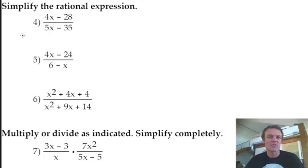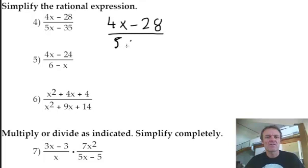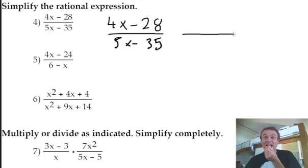So, this first one. I have 4x minus 28 on the top. I've got 5x minus 35 on the bottom. Now, you look at that, you go right. What can I factor out of the numerator?